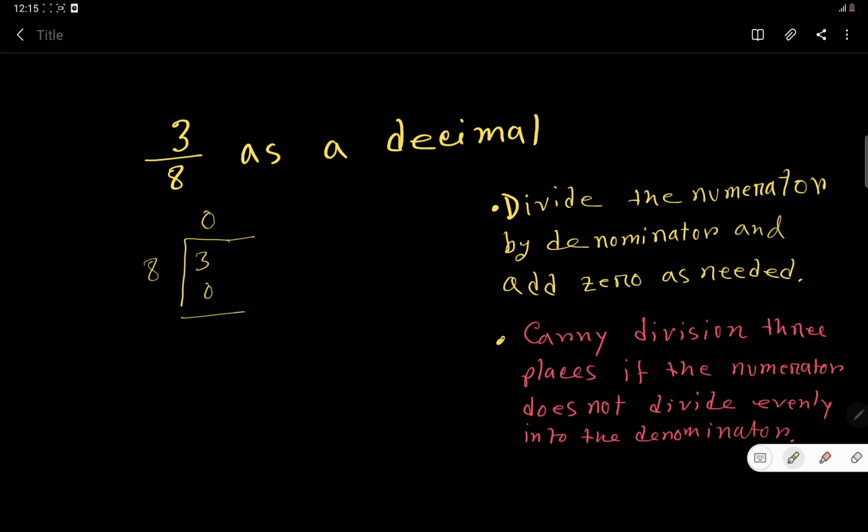If you subtract, you get 3. But remember, we can express this 3 as 3.0 or 3.00 - we can add any number of zeros as needed. So bring down this 0 here.